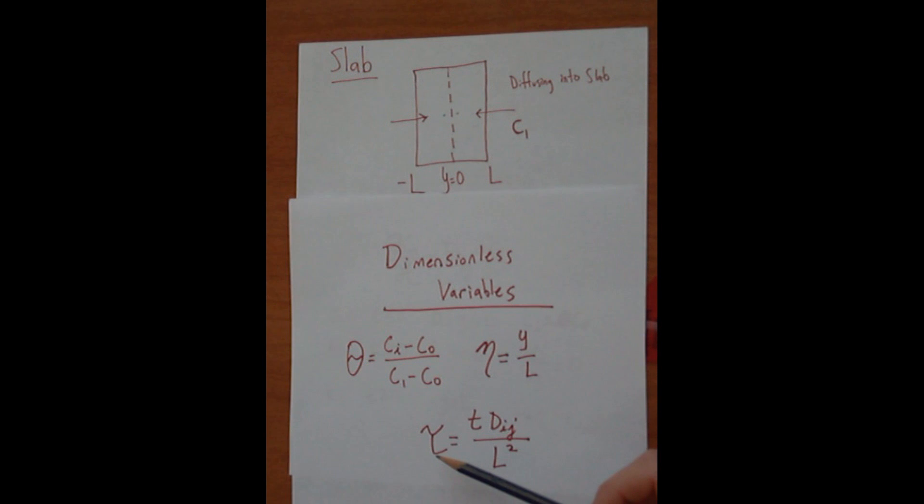And the dimensionless time tau is T times the diffusion coefficient divided by the half thickness L squared.